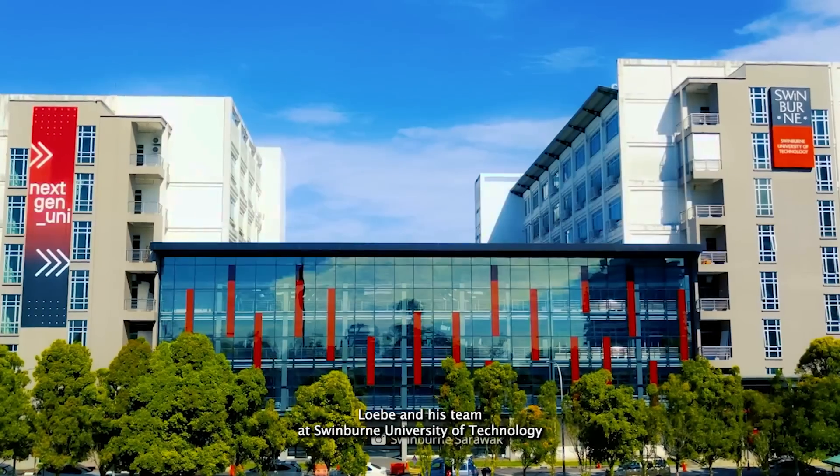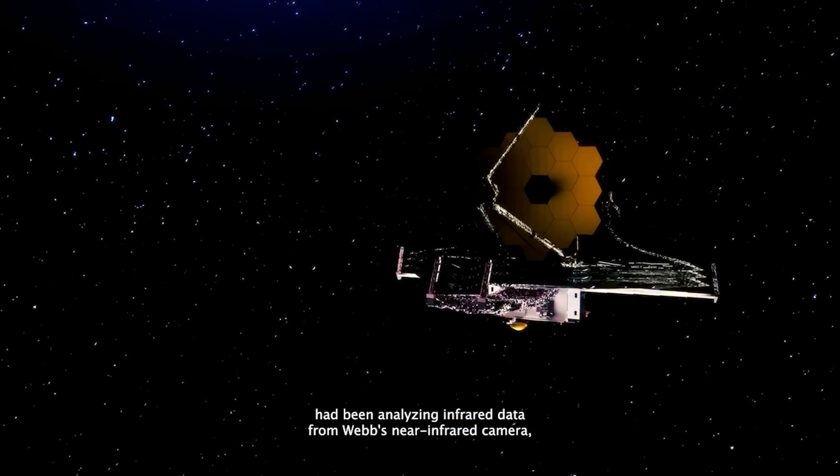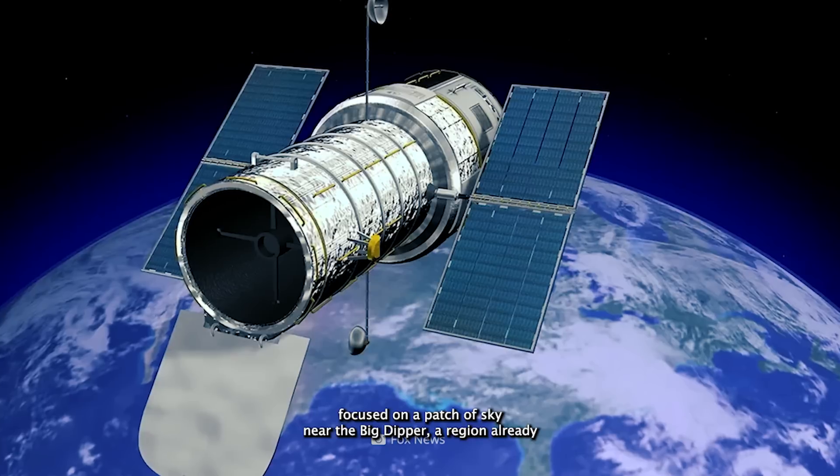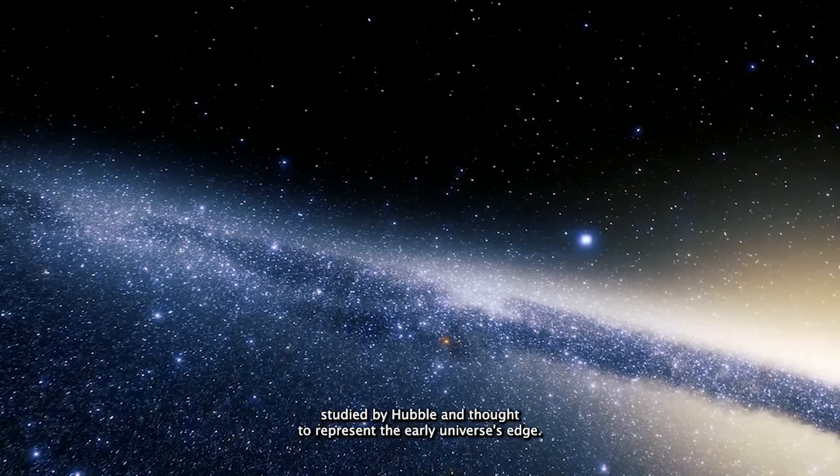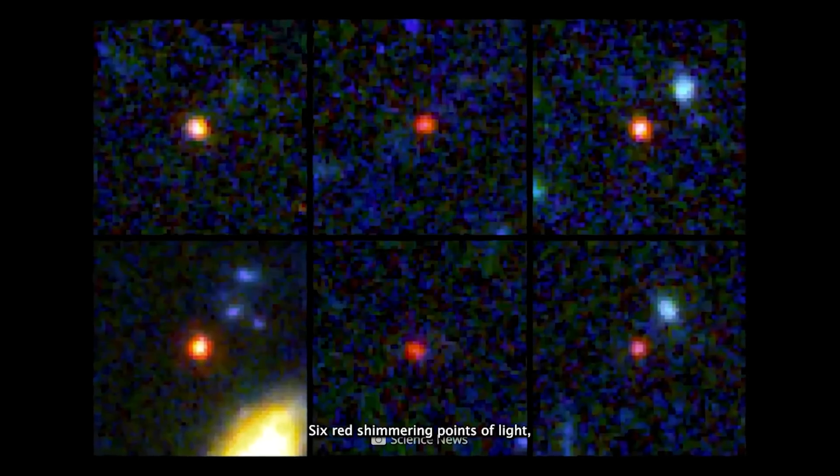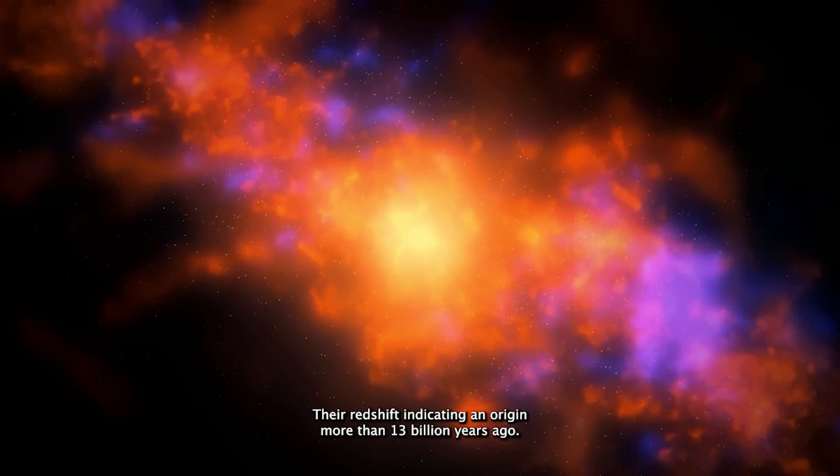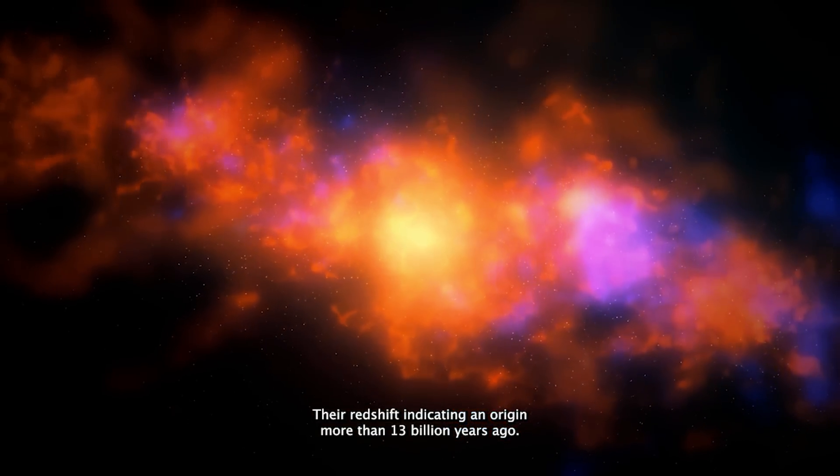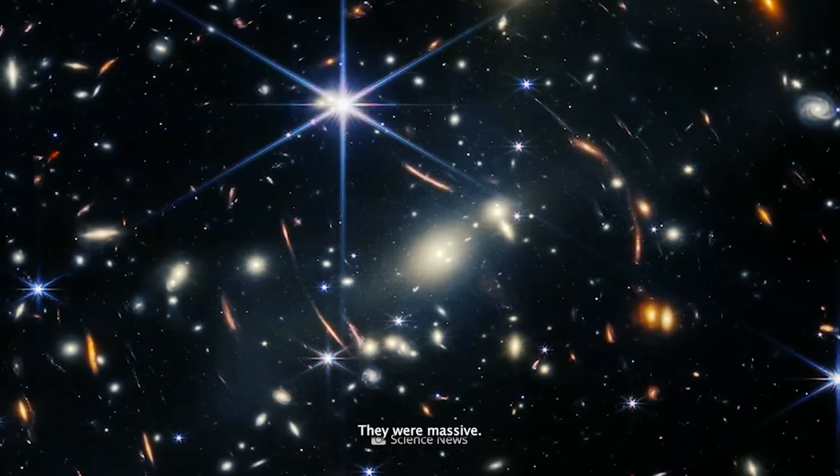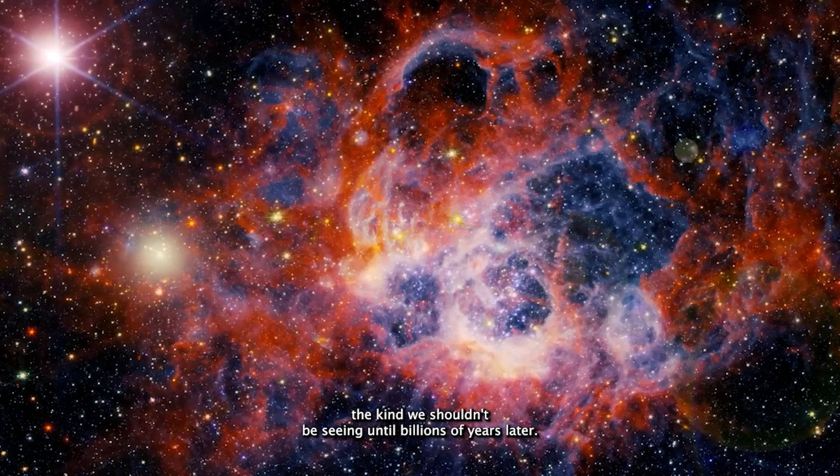Labbe and his team at Swinburne University of Technology had been analyzing infrared data from Webb's near-infrared camera, focused on a patch of sky near the Big Dipper, a region already studied by Hubble and thought to represent the early universe's edge. But what Webb revealed was something far beyond expectation. Six red, shimmering points of light, their wavelengths stretched by time and distance, their redshift indicating an origin more than 13 billion years ago. These weren't the tiny galactic embryos scientists expected. They were massive, well-formed galaxies, the kind we shouldn't be seeing until billions of years later.